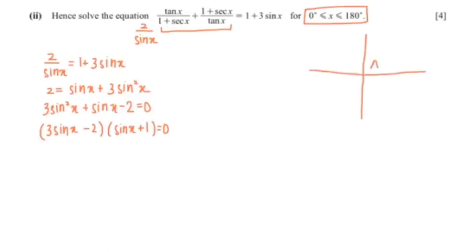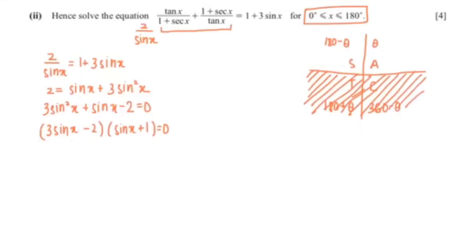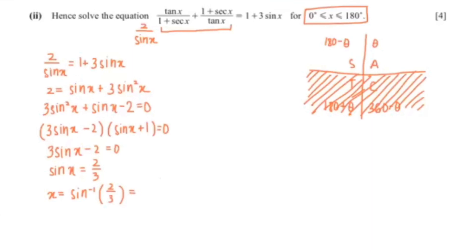The range is 0 to 180 degrees. I'm going to draw the quadrant — the shaded part is what we don't want because it is more than 180 degrees. From 3 sine x minus 2 equals 0, we get sine x equals 2 over 3. So x equals inverse sine of 2 over 3, which gives 41.8 degrees. x is also 180 minus 41.8, giving us 138.2 degrees.